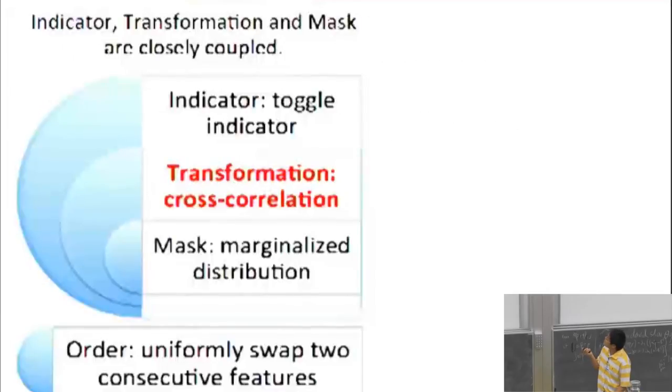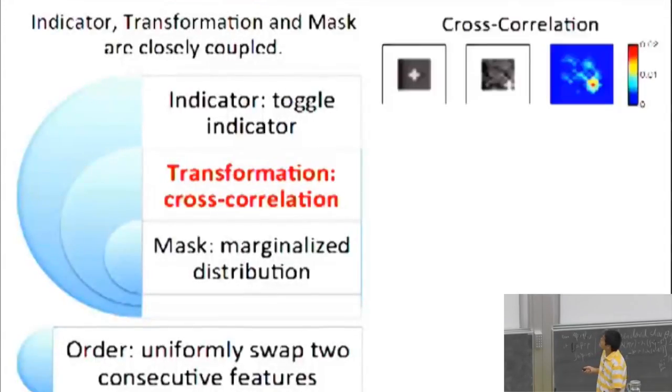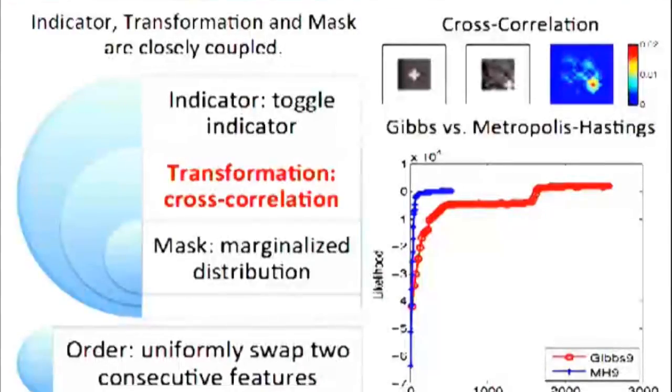Due to the time limit, I'm not able to talk about the inference in great detail. One of the most interesting things in our inference is sampling the transformation. In the vanilla noisy or transform Indian Buffet process, they use Gibbs sampling, which exhaustively searches across all possible transformations, and that is very slow. To replace that, we use Metropolis-Hastings steps, where the proposal distribution comes from the cross correlation between feature and the residue. Experiments indicate there's a great speedup for Metropolis-Hastings.